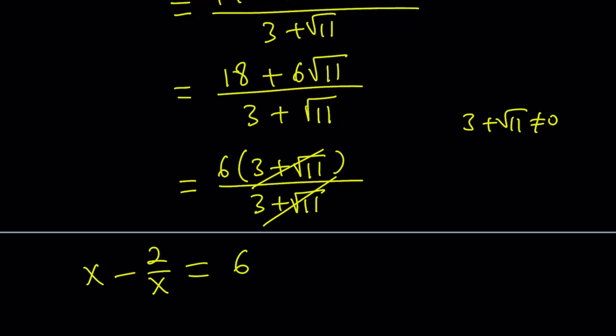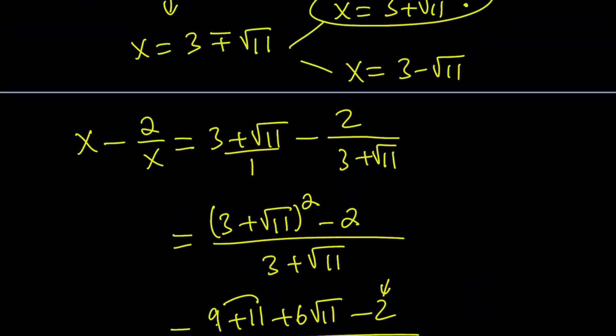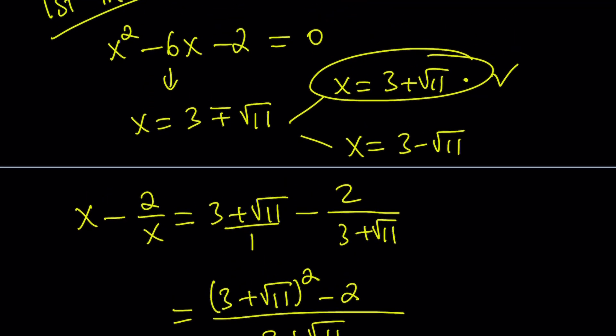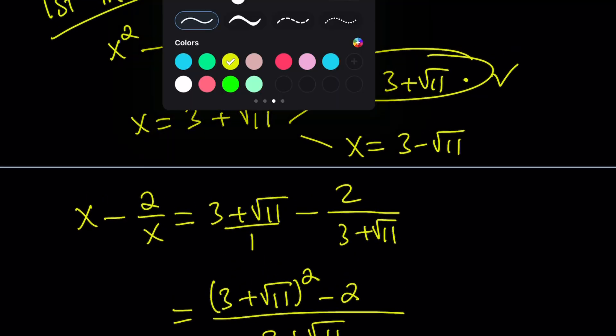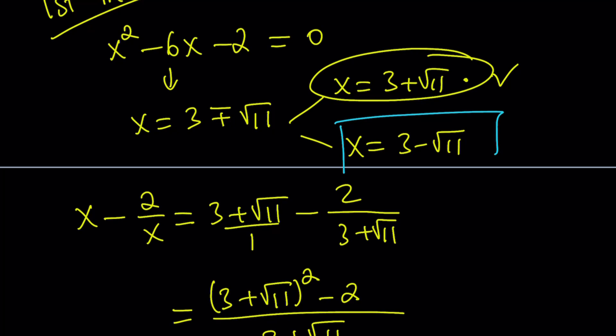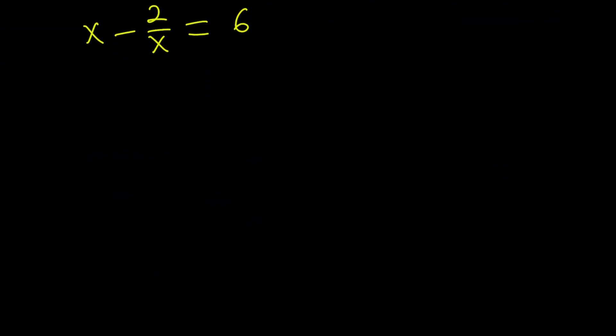Remember, we started off with x equals 3 plus root 11. Now we're going to use the other solution, 3 minus root 11. So what happens if x is 3 minus root 11? What am I going to do with this expression?